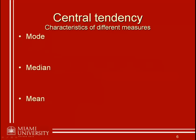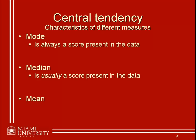In addition to just knowing what these different measures of central tendency are, it's important to know the characteristics of the different measures as well — in particular, how sensitive some of these measures are to different properties of the data. The first thing to realize is the mode is always going to be a score that's actually present in your data, as it is the most frequently occurring score in the data.